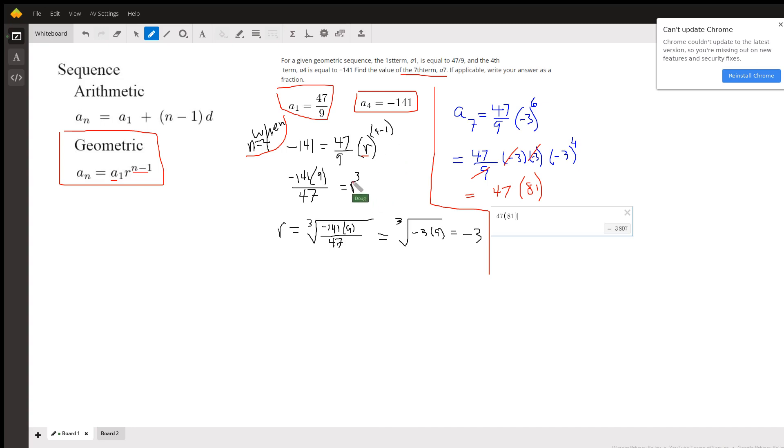So to isolate this r cubed, multiply both sides by the reciprocal of 47 ninths, which is 9 47ths, and then take the cube root of that expression. If you write it like this, you might notice that 47 divides into negative 141 evenly, negative 3 times, and now we're taking the cube root of negative 27, which is negative 3. So there's what r is.